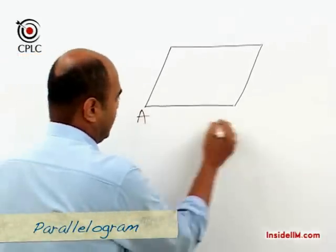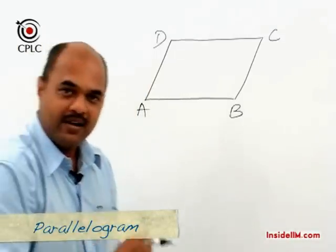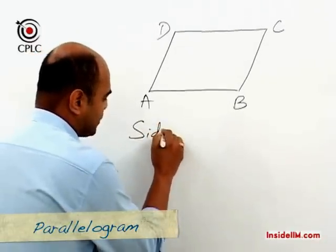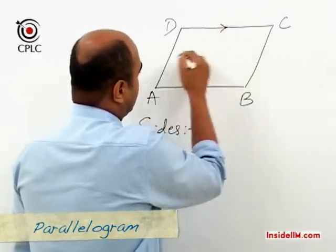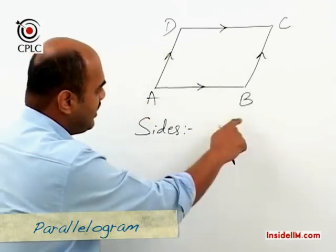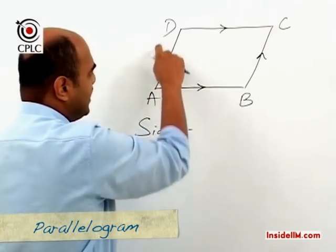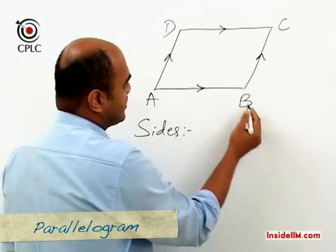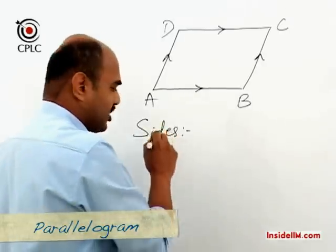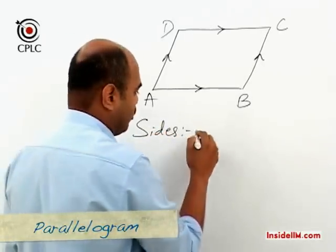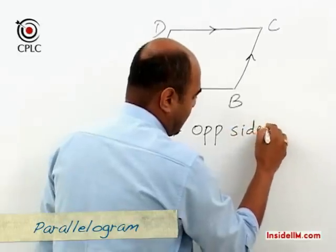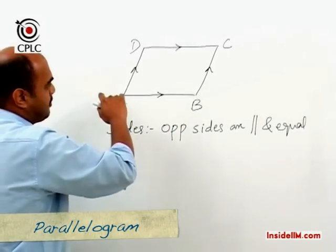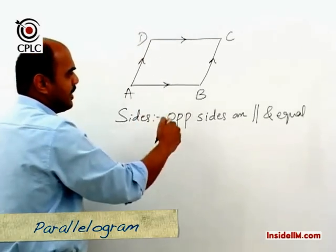If this is a parallelogram ABCD, then a parallelogram has certain specific properties. With respect to sides: opposite sides are parallel, meaning AB is parallel to CD and AD is parallel to BC. Also, opposite sides are equal, meaning AB equals CD and AD equals BC. So opposite sides are parallel and equal.